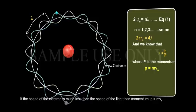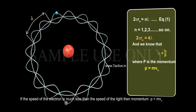If the speed of the electron is much less than the speed of light, then momentum p equals m vn. Therefore, λ equals h by p equals h by m vn. And we know that 2π rn equals nλ equals n times h by m vn.